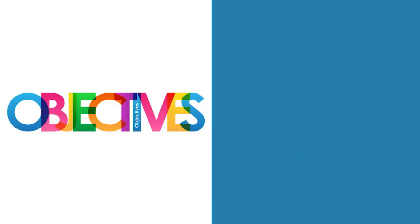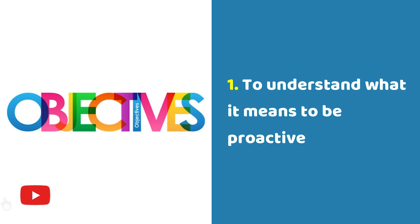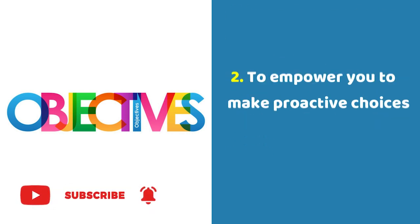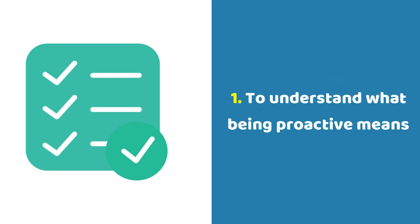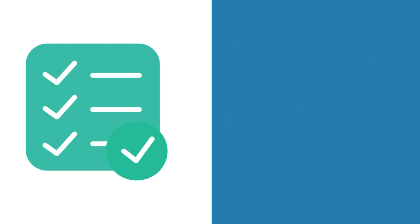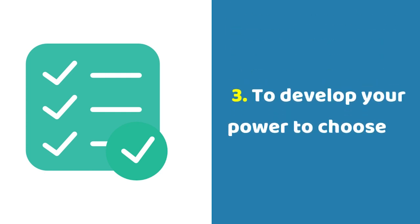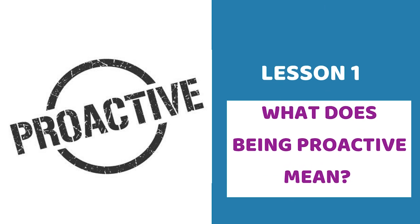The learning objectives of the course are to understand what it means to be proactive and to empower you to make proactive choices. The outline of this course is: one, to understand what being proactive means; two, know the difference between proactive and reactive behavior; three, to develop your power to choose.